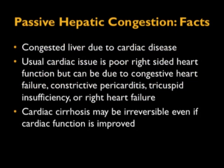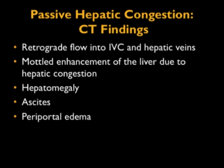Among the things we see not uncommonly in the liver, we talk about passive hepatic congestion. Since we're scanning a lot of older patients — particularly TAVR patients — when patients have poor cardiac output, it's not uncommon to see a congested liver due to cardiac disease. The usual cardiac issue is poor right-sided heart function, but it can also be due to congestive failure, constrictive pericarditis, tricuspid insufficiency, or right heart failure. Cardiac cirrhosis may be irreversible even if cardiac function is improved, so diagnosis is important. When you inject contrast, it's rare to see contrast going into the hepatic veins — in a rapid bolus in a younger healthy person this reflux is possible, but typically when you start seeing flow into the IVC or hepatic veins, you're talking about right-sided heart failure.